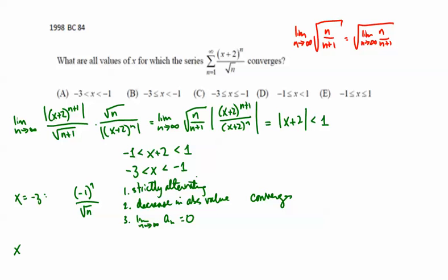With x equals negative 1, we're going to end up with simply 1 over square root of n. And that's a p-series. p equals 1/2, not greater than 1. Therefore, it diverges.